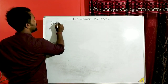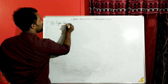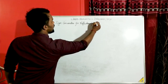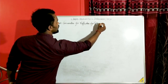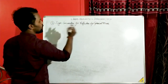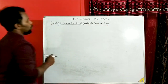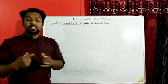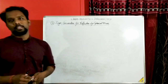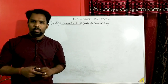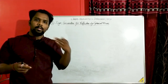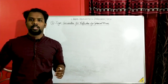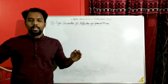Our next topic is sign convention for reflection by spherical mirrors. In class 9 you got the concept of scalar and vector quantity in the motion lesson. Distance is a scalar quantity — it has no direction. Displacement is a vector quantity — along with magnitude it has direction. Once we add direction, it can be positive or negative. If we consider the right side as positive and the left side as negative, a displacement of 20 km to the right is positive; to the left it is negative.